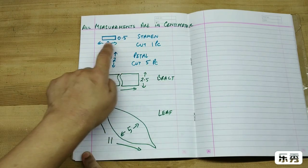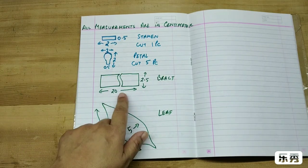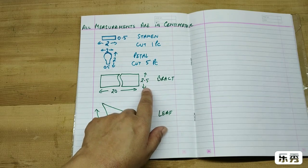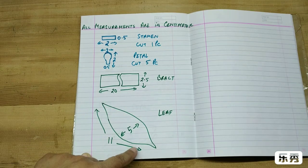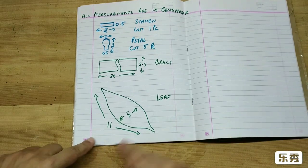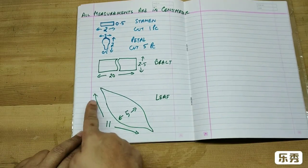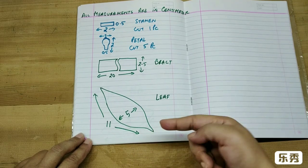This is the brat, a 2.5 by 20 centimeters long strip. This is the leaf, 5 centimeter wide and 11 centimeters long. You can make leaves longer than this also.